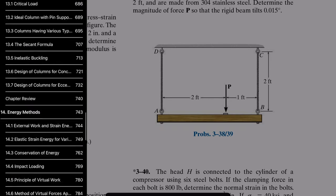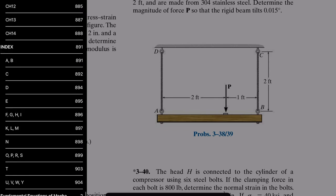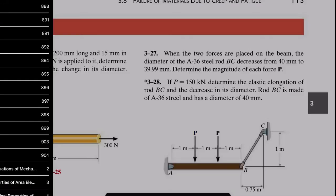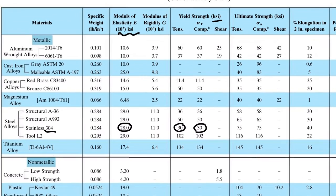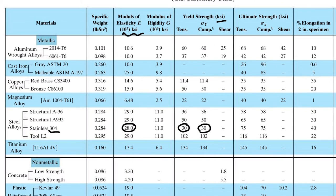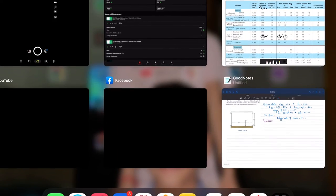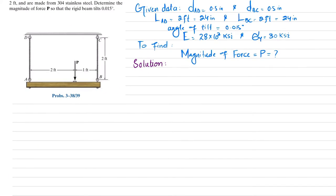If you go to the end of the book, there is an average mechanical properties table. As highlighted in a previous problem, the modulus of elasticity is 28 × 10³ KSI, which is 28 × 10⁶ psi, and the yield strength is 30 KSI. With that data, we will move back and solve this problem.